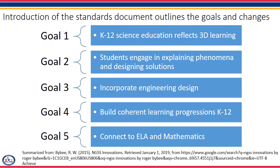The first goal of the new science standards is that science education will reflect the three dimensions of science learning. Second, that students engage in learning science by doing science — explaining phenomena and designing solutions, and using science and engineering practices to do so. Third, incorporating the engineering design process is a big innovation. Fourth, building coherent learning progressions across K-12 so that students are not learning disconnected facts, but are seeing concepts develop over time and recognizing the elegance in science. The last goal is that science makes connections cross-disciplinarily to ELA and mathematics standards.